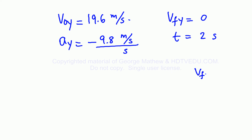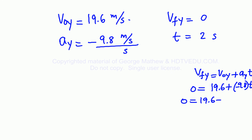Let us look at the solution again from another point of view. If you prefer, you can use the formula: V_final_Y equals V0_Y plus A_Y times T. V_final_Y is 0, V_initial_Y is 19.6, and the acceleration along the vertical is negative 9.8. So 0 equals 19.6 minus 9.8T, giving T equals 19.6 divided by 9.8, which is 2 seconds.